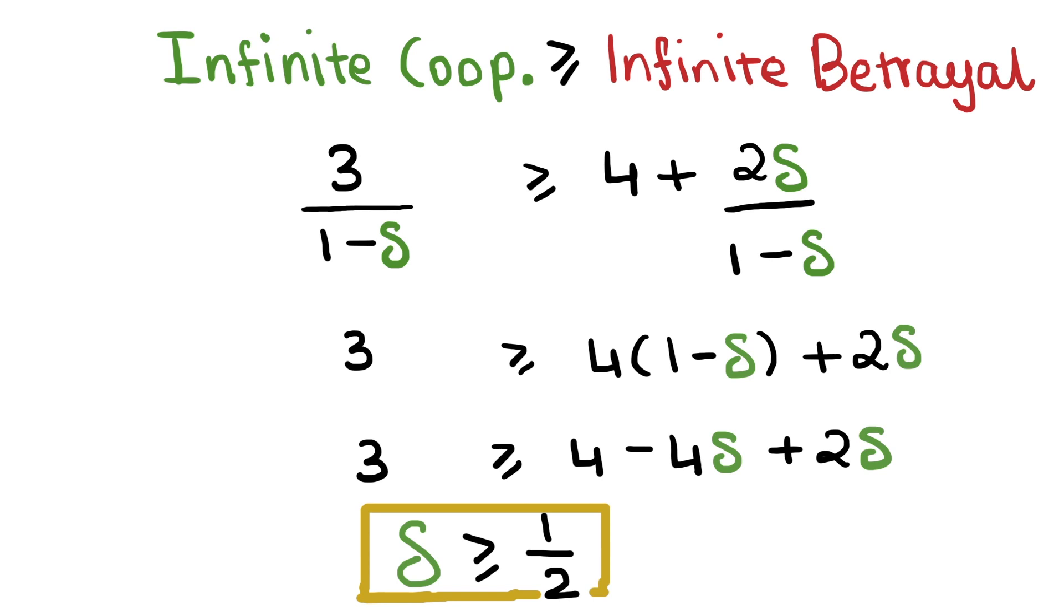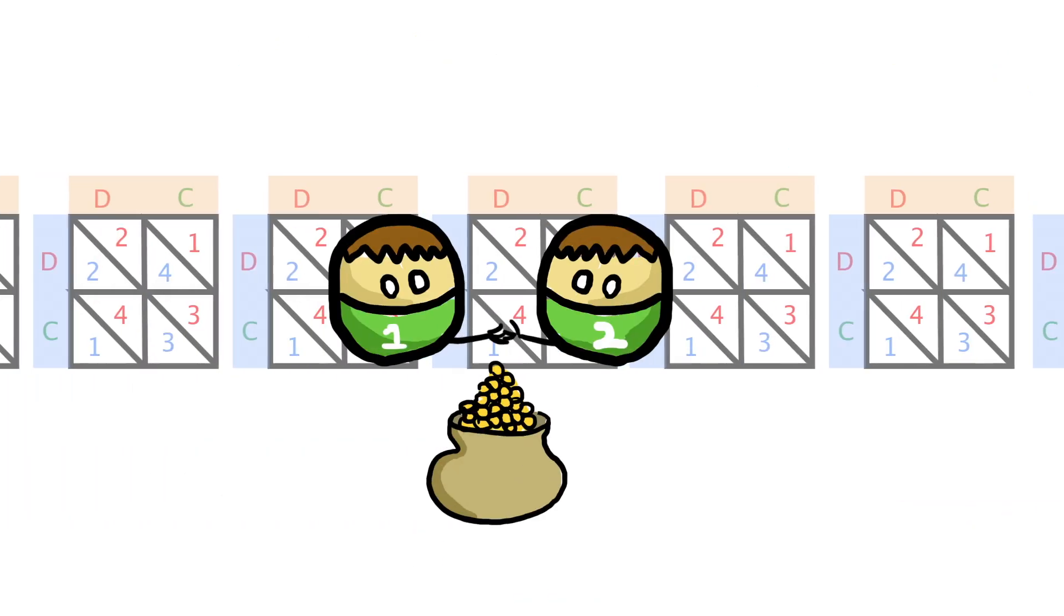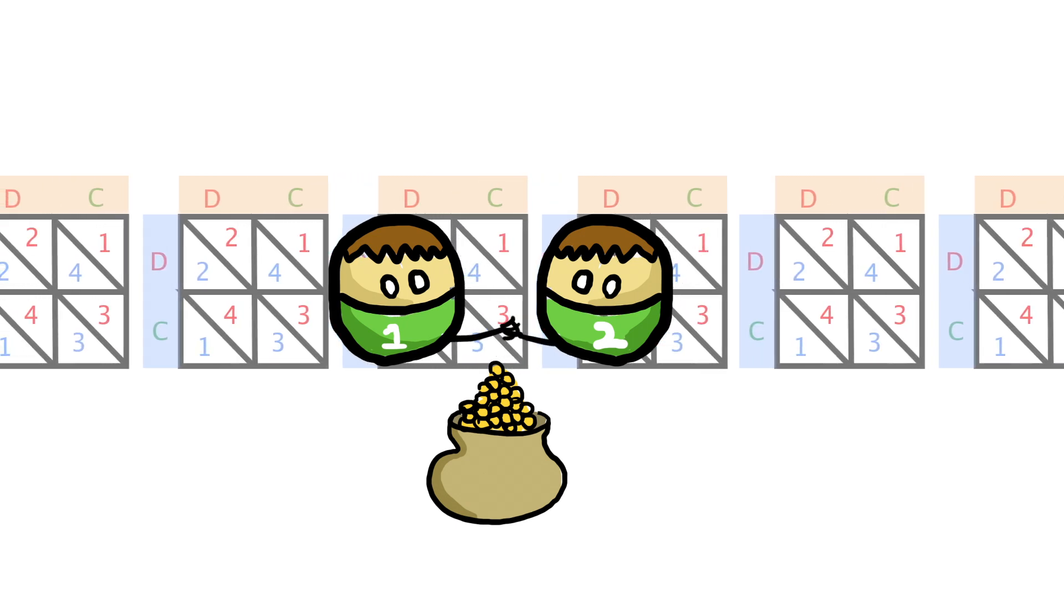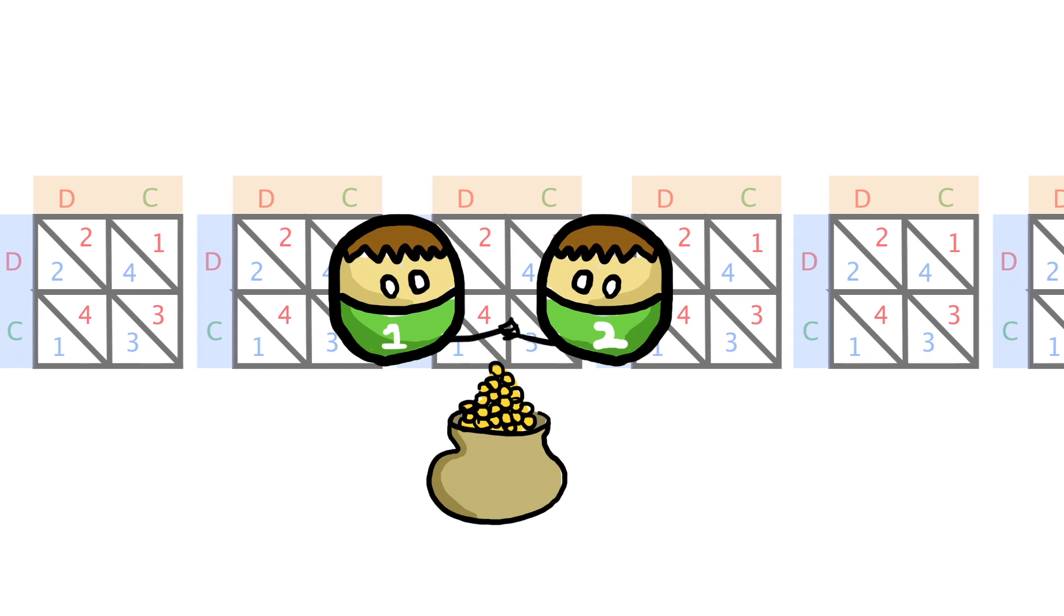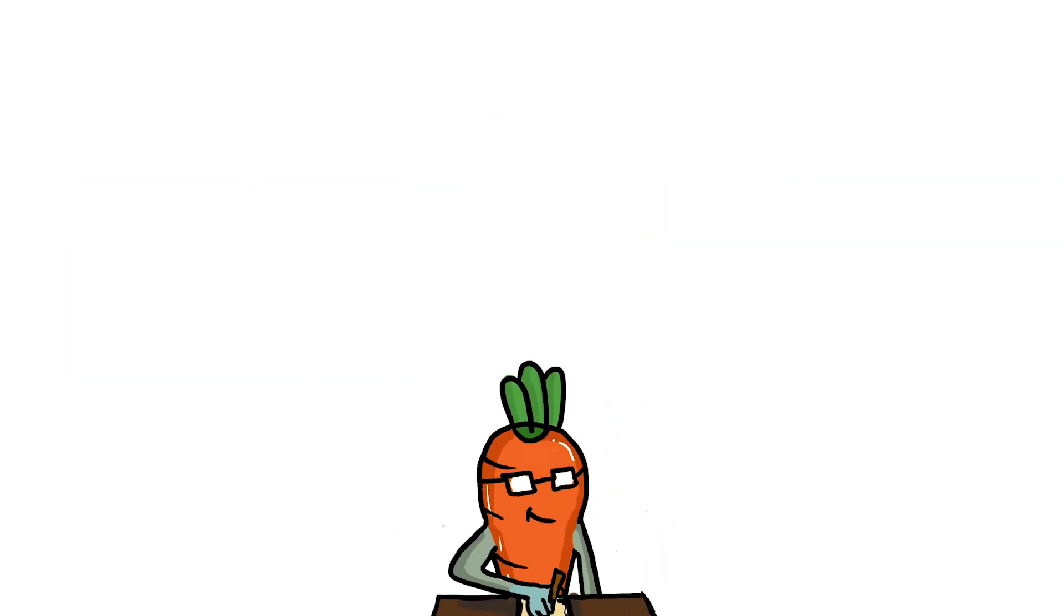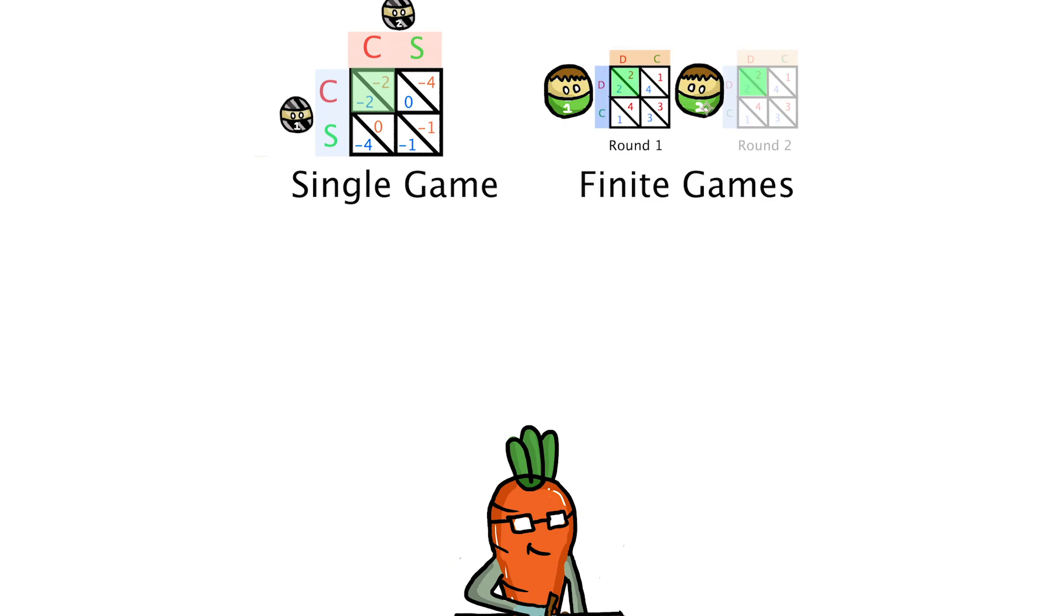This not only shows us that the grim trigger strategy is a mathematically realistic solution, but also that cooperation when infinite games are played is indeed feasible. I think this result is beautiful. When one or finitely many games of the prisoner's dilemma were played, the solution was always betrayal. But as soon as we introduced infinities, strategies for cooperation seemingly emerged.